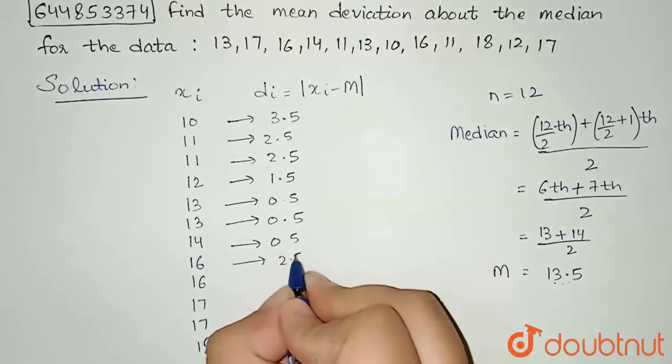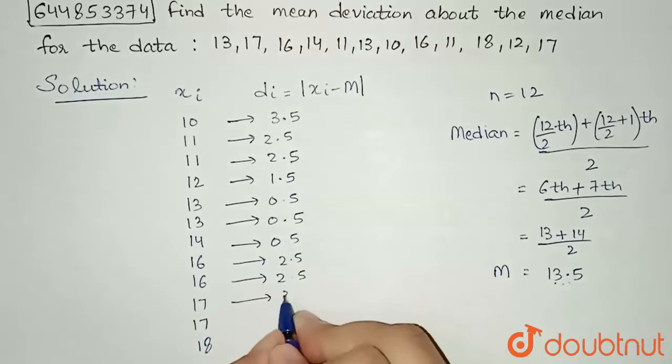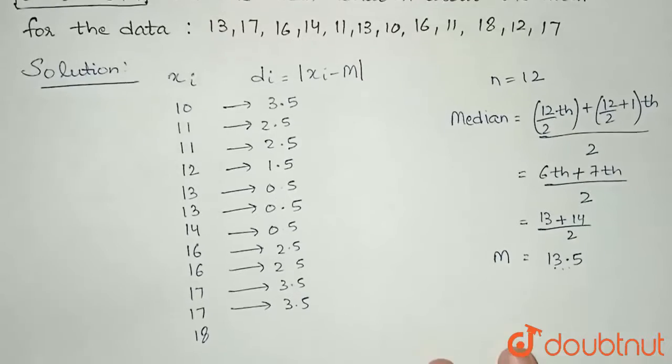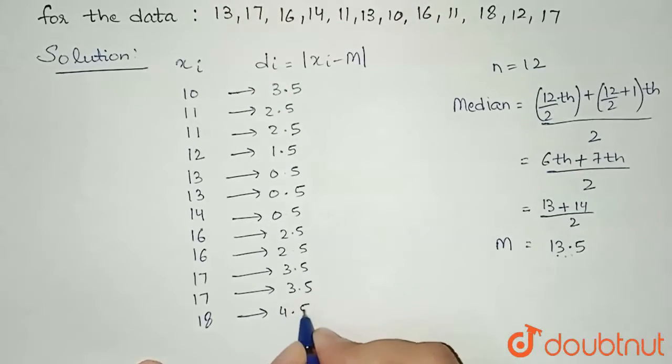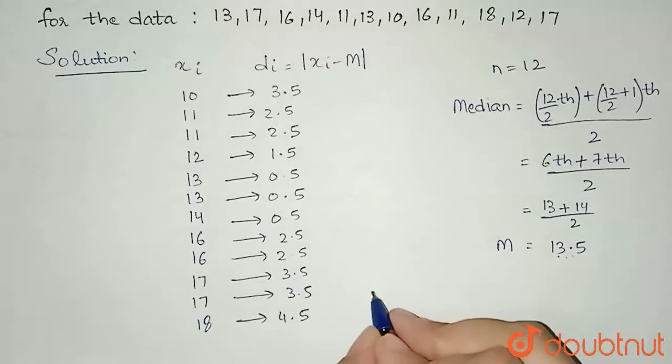Now for 14, for 14 also I will get 0.5 only. For 16, 2.5. Again for 16, 2.5. Now for 17, 3.5 and 3.5. And now for 18, I will get 4.5.